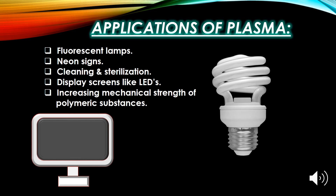Let's talk about the applications of plasma. In fluorescent lamps, plasma is used. The passage of electricity through the gas in the tube causes ionization of the gas, and hence plasma is produced, which glows inside the tube of the lamp. In neon signs, plasma is also used.